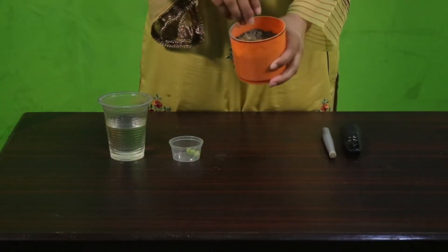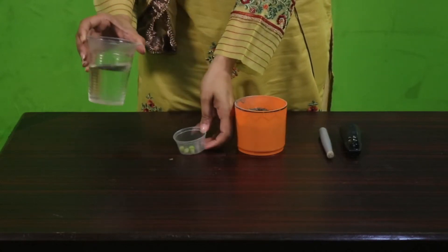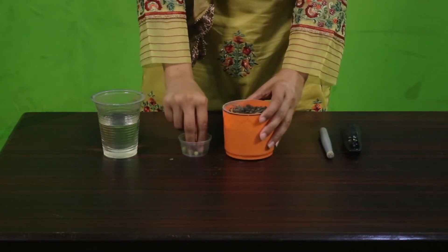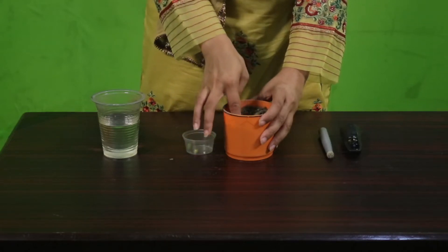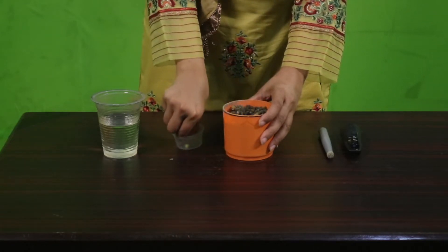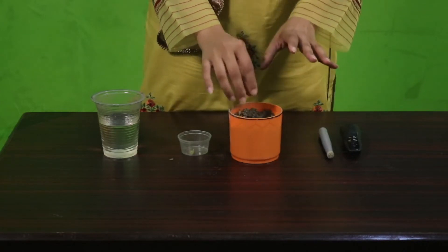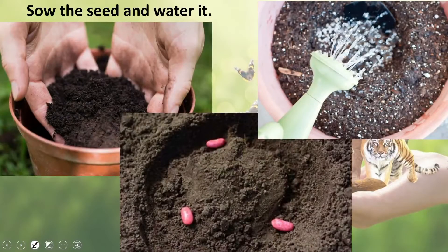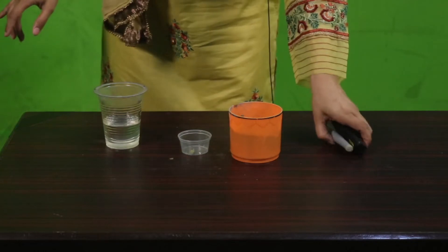I have a container full of soil, pea seeds, and water. First, I'll put the seeds into the soil, leaving a little bit of space, because each seed will grow into a new plant and they need proper room. Then I cover the seeds with soil and pour water over them. That completes the sowing process.